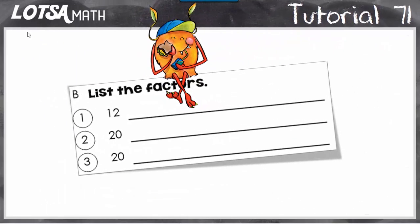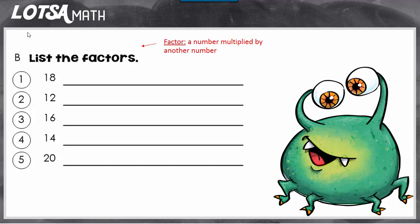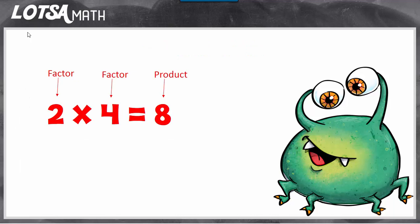For these questions we're going to list the factors. A factor is just a number that's multiplied by another number. So in this number sentence you can see that the factors are 2 and 4 because they're being multiplied and the product is 8.